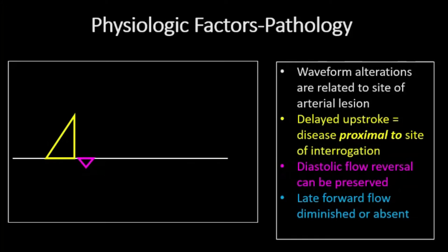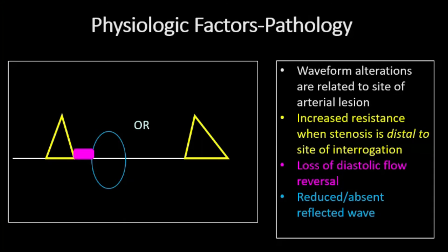In the extremities, delayed upstroke with a sloping pattern reflects disease proximal to the site of interrogation. The late forward flow may be diminished or absent, contributing to the biphasic appearance. When the stenotic lesion is distal to the site of interrogation, resistance increases and the first antegrade systolic waveform broadens. Turbulent flow within a narrowed segment contributes to this spectral broadening. Diastolic flow reversal is lost and the reflected wave is diminished or absent.